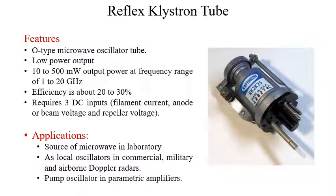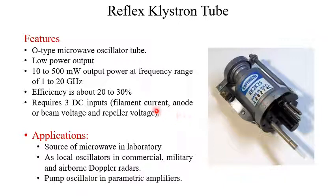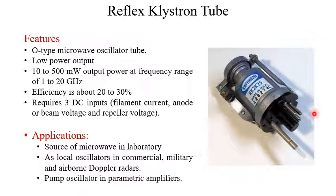First, consider the reflex klystron tube. This is an O-type microwave oscillator tube — it is an oscillator, not an amplifier. Its power output is low: 10 to 500 milliwatts at a frequency range of 1 to 20 GHz, with an efficiency of about 20 to 30%. It requires three DC inputs: one for filament current, one for anode or beam voltage, and one for the repeller voltage. Applications include use as a microwave source in laboratories, as local oscillators in commercial, military, or airborne Doppler radars, and as pump oscillators in parametric amplifiers.